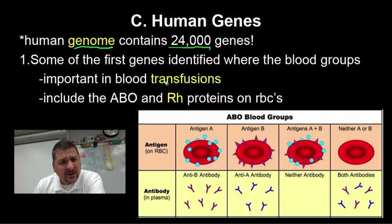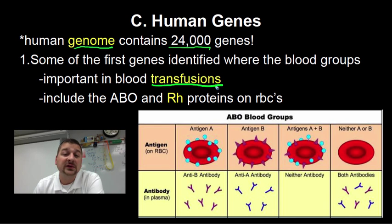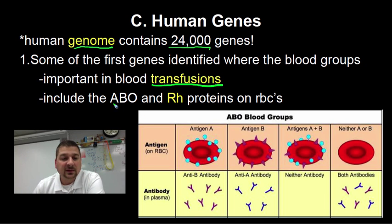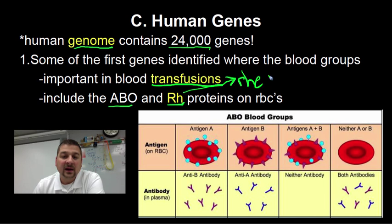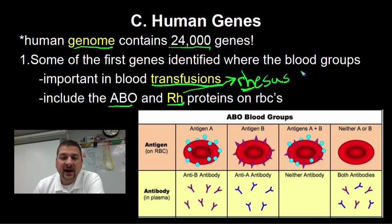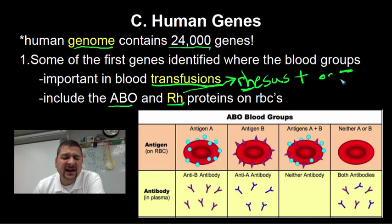One of the first genes scientists found were involved with blood groups — blood types — because this was very important when we were able to do blood transfusions for surgery or different diseases with blood loss. The two main protein groups they found were the ABO proteins and the RH proteins. The RH proteins were actually discovered in the rhesus monkey — that's where we get the RH from. The RH factor is either positive, meaning you have that protein on the surface of your red blood cell, or negative.